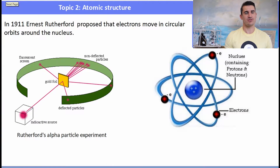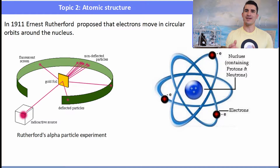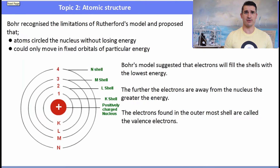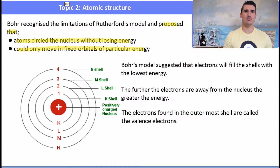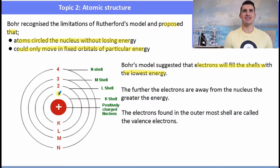Rutherford's experiment determined his solar system model, which was then proven incorrect. Bohr recognized the limitations and proposed his own model, saying that electrons circled the nucleus without losing energy and could only be found in regions of fixed energy, which he called orbitals. He also said that electrons would fill shells with the lowest energy first.